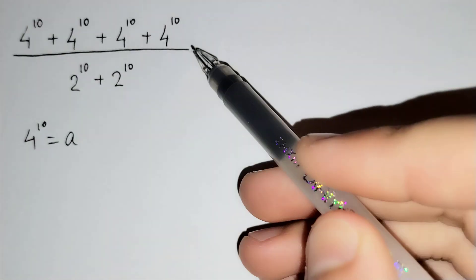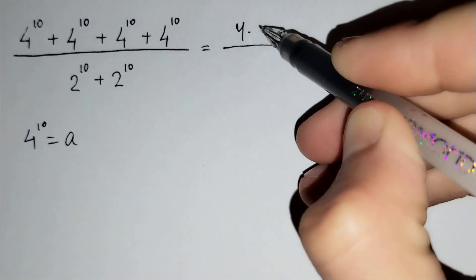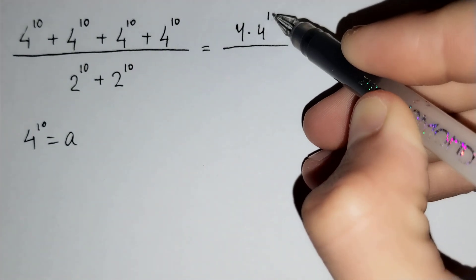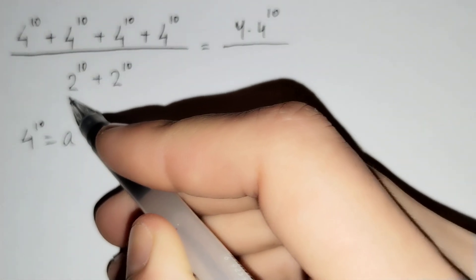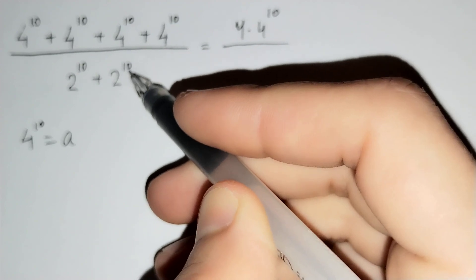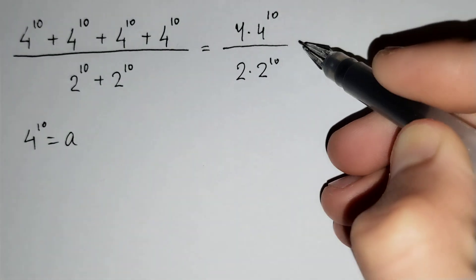If we think that 4 power 10 equals a, you can see here 4 times a — this is equal to 4 times 4 power 10. And here, 2 power 10 plus 2 power 10 equals 2 times 2 power 10.